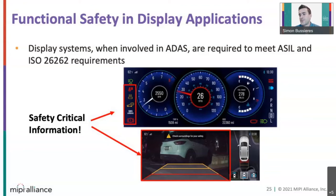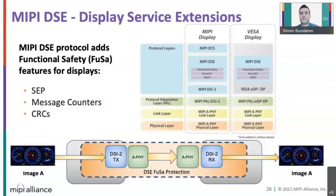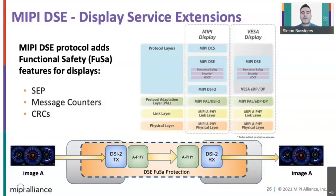Fortunately, automotive industry standards such as ISO 26262 exist to guide designers on including functional safety features and how to prove they are efficient. MIPI has developed a new specification called DSE — Display Safety Extension — in which ISO 26262 recommendations are incorporated. By encapsulating DSI packet payload into service extension packets, the main mechanisms are CRCs and message counters to ensure all packets are received and their integrity is correct. Using this diagnostic, faults can be detected easily on the display side and reported to the host.